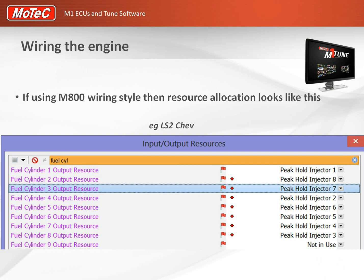If you were not to follow that advice and leave it in the M800 firing order, your allocation would look quite different. Using the LS2 Chev as our example, each physical cylinder resource would be allocated to a different injector drive as if wired sequentially like a distributor or an M800. If you're converting from an M800 to an M1, I'd really encourage you to take the time to re-pin the ECU - it's five minutes - and just make it 1 is 1, 2 is 2, 3 is 3.